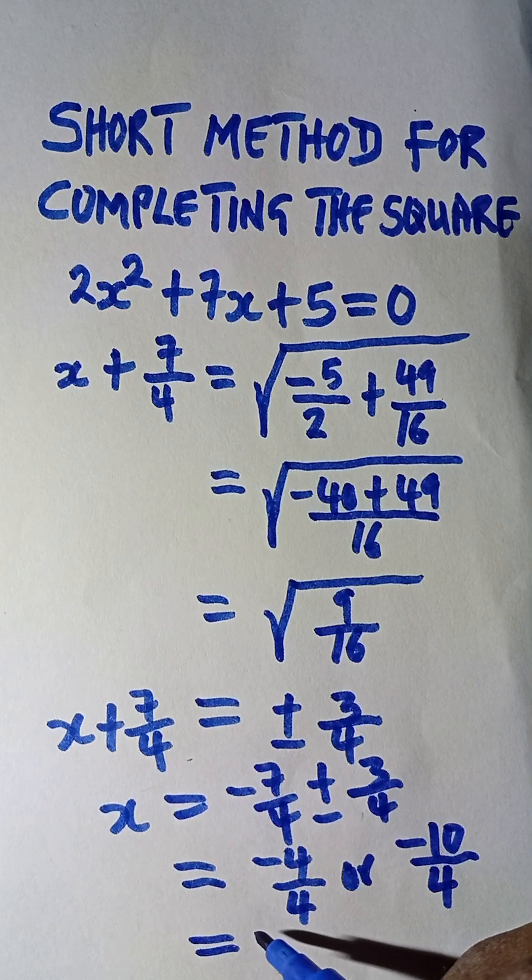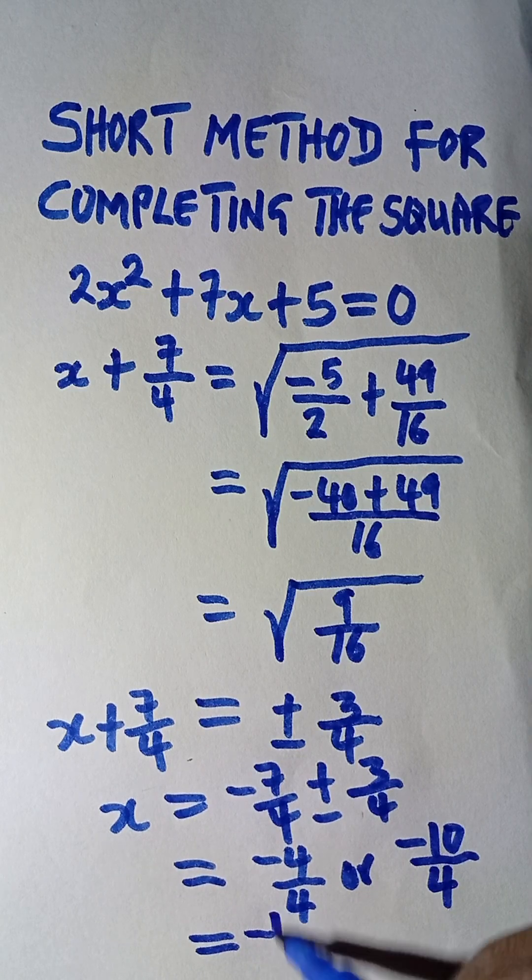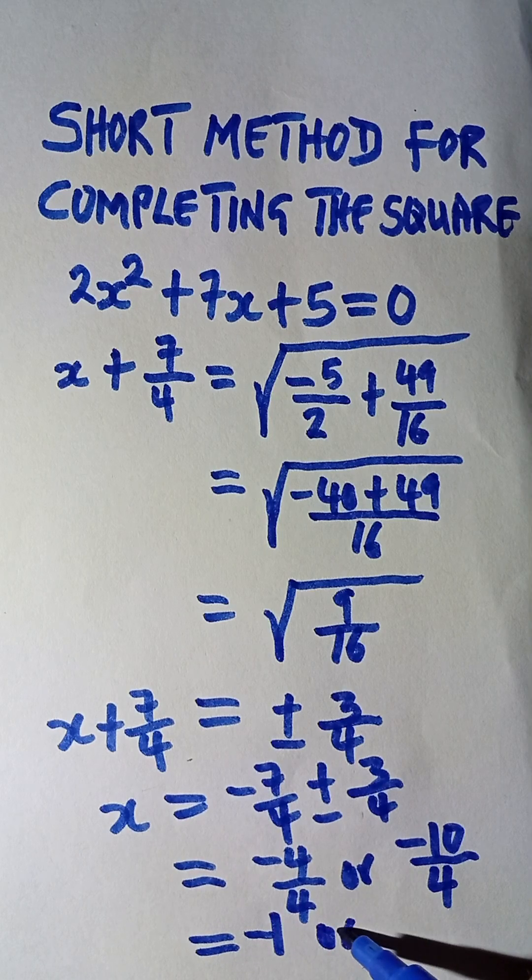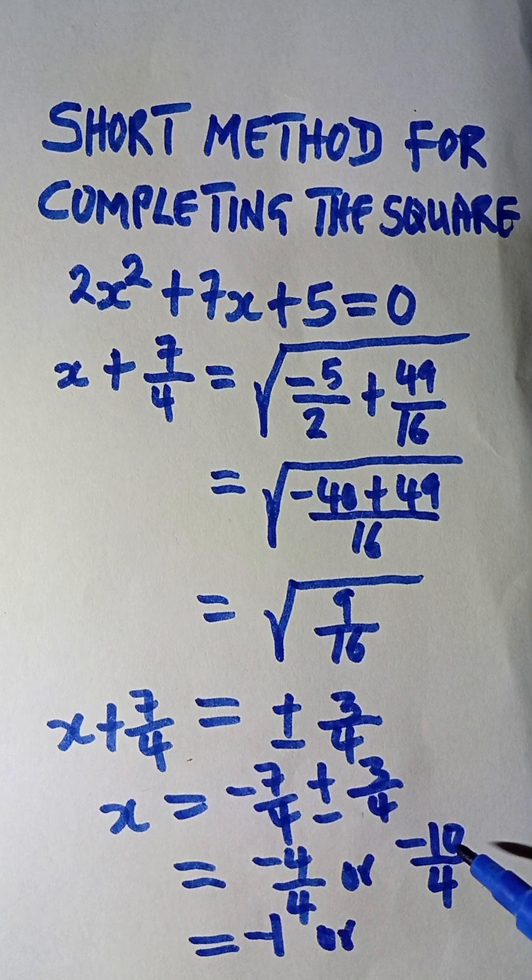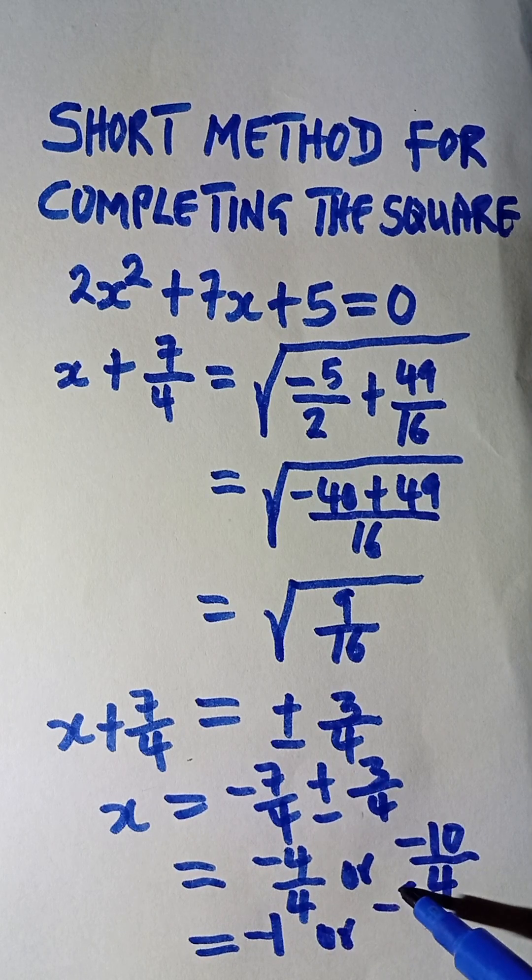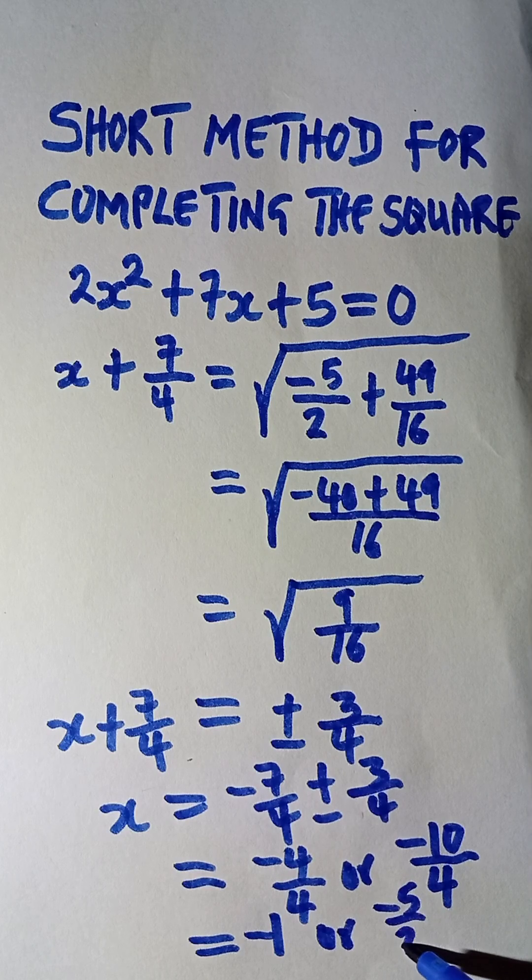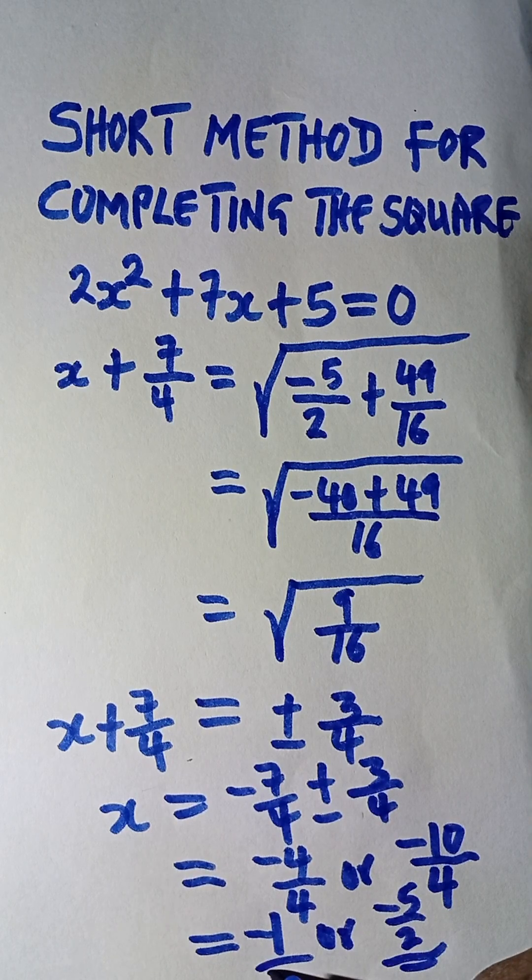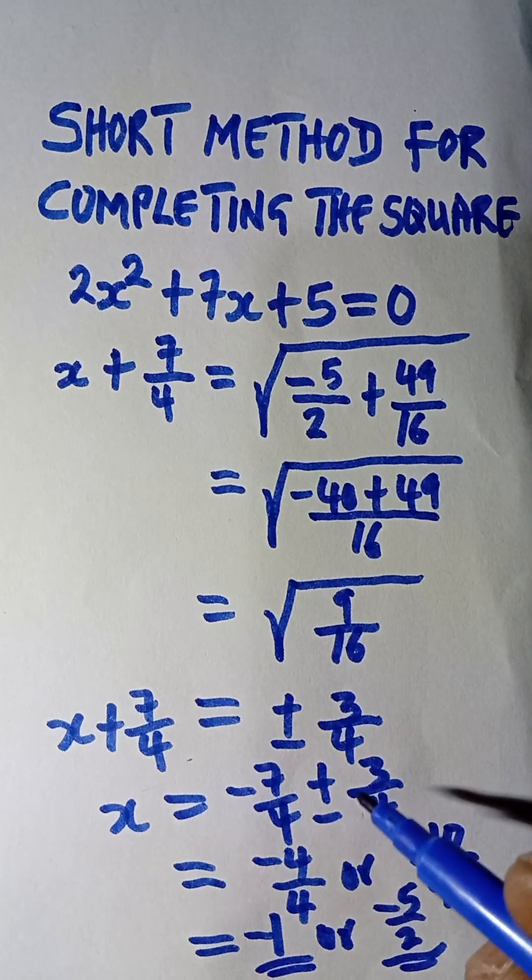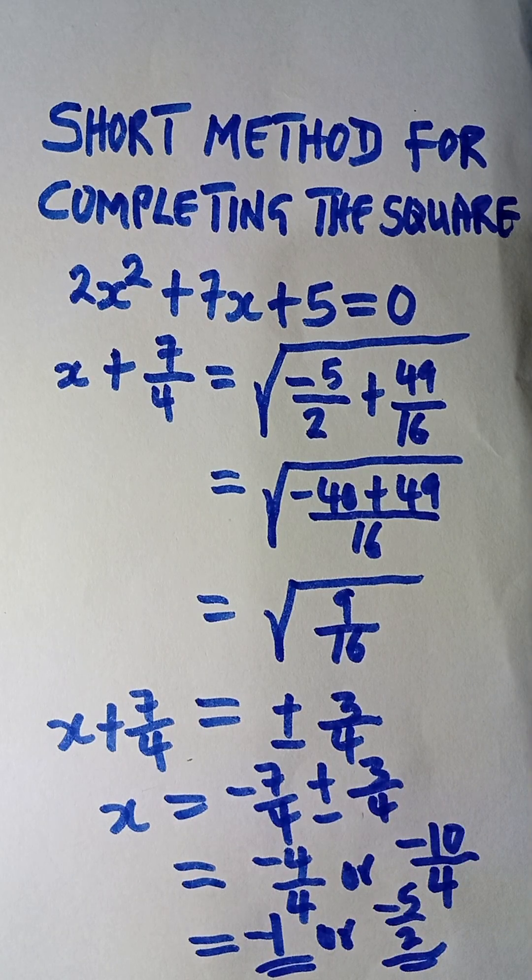And then finally you can write that minus 4 divided by 4 is minus 1, or minus 10 divided by 4 is minus 5 over 2. So these are the final answers. So this is a short trick for completing the square. Please subscribe.